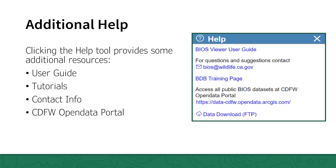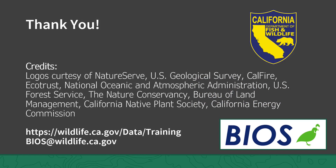If you find yourself in need of additional assistance while working in BIOS, select help from the tool list. This will open a panel with several helpful links, including the BIOS user guide, the biogeographic data branch tutorial and training page, an option to email us with your questions, quick access to the CDFW open data portal, and a link to the public data downloads FTP directory. For more information on BIOS, please view the next two parts of the training course: BIOS Tools and BIOS Advanced Tools. Thank you for your time.